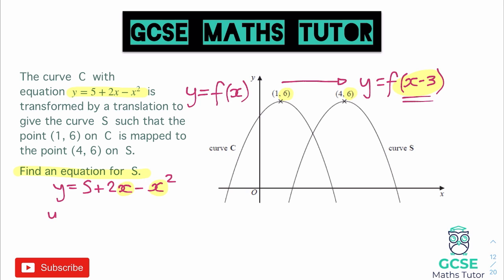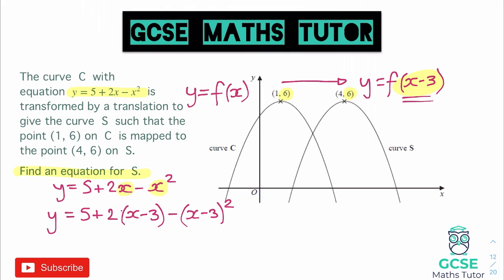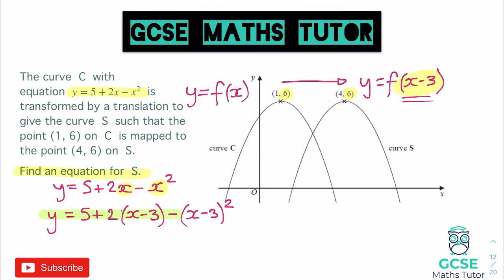So if we do that, it would read as: y equals 5 plus 2 times (x minus 3), take away (x minus 3) squared, keeping the squared on the outside of the bracket. And there we go — that actually is an equation for S. If the question didn't say anything else, we could leave that as our answer, and that would be absolutely fine.